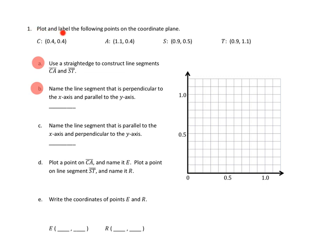First we're going to look at Problem Number 1. We are going to plot and label the following points on the coordinate plane. I can see my coordinate plane over here. I know that this is my x-axis, and up here is a y-axis. That first point C is at four tenths and four tenths. Each of these boxes looks like it's in tenths, so counting four tenths on x and four tenths on y — I'm going to go ahead and mark that point right there as point C.